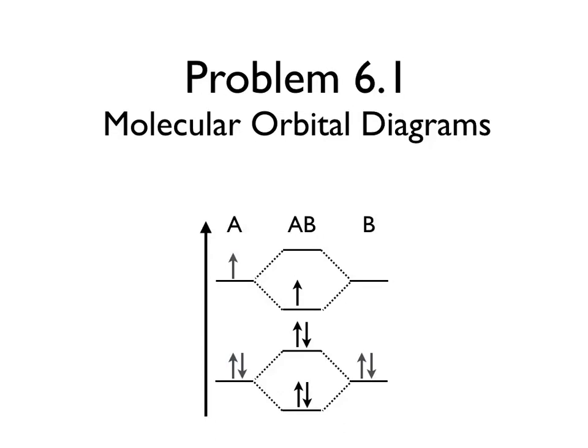In this problem, we'll be looking at molecular orbital diagrams, which are also called correlation diagrams. These show how the electrons in two separate atoms can combine in order for those two atoms to form a molecule. As such, we use the electronic structure of the two atoms to build up the electronic structure of the molecule as a whole.